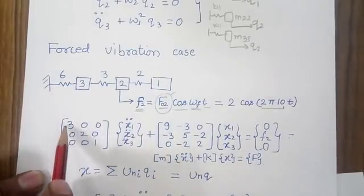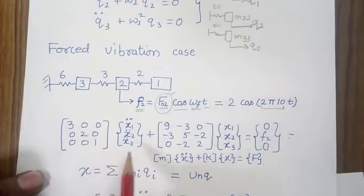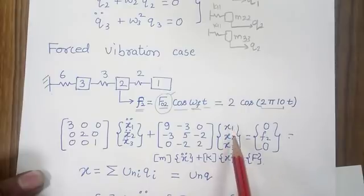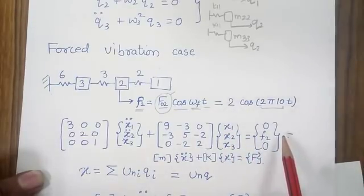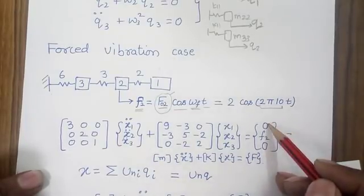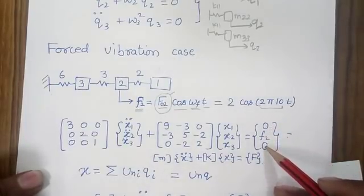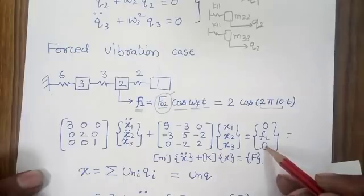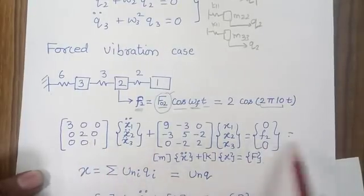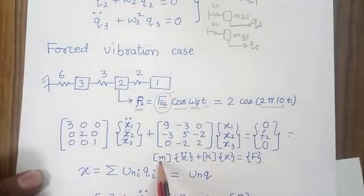Writing the equation of motion for this system: mass matrix diag(3,2,1) times acceleration vector plus stiffness matrix times displacement vector equals the force vector. The force vector is [0, F₂, 0], indicating force is applied only at the second mass with no force on the first and third masses. In symbolic form: M·Ẍ + K·X = F.